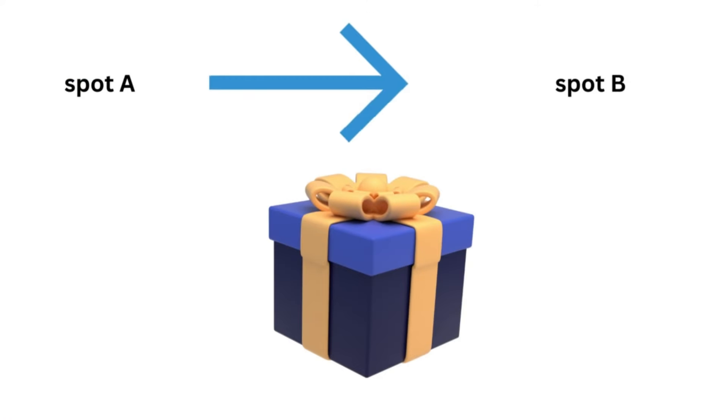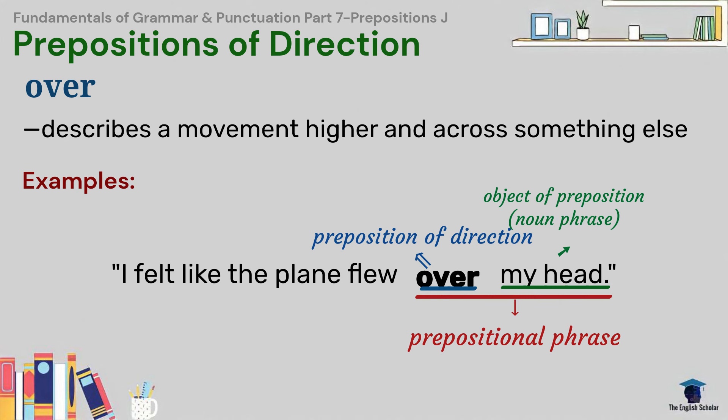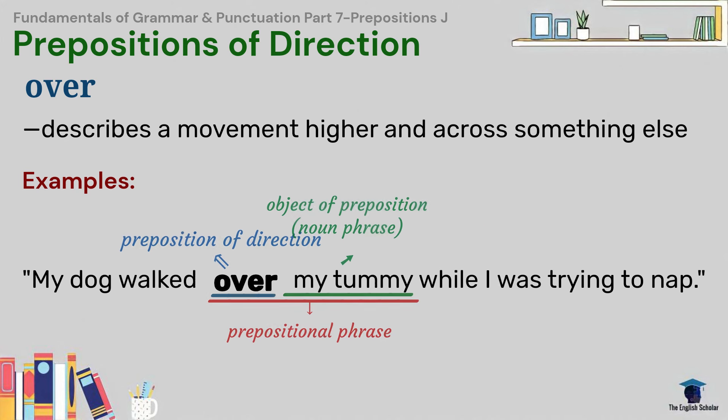Over describes a movement higher and across something else. For example, I felt like the plane flew over my head. My dog walked over my tummy while I was trying to nap.